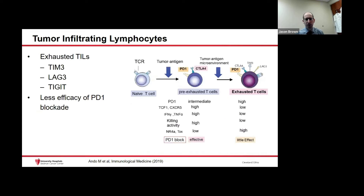There are also measures of how active tumor-infiltrating lymphocytes are. Once they become dysfunctional, they're called exhausted. Exhausted T cells actually have high PD-L1 scores, but immunotherapy or blockade of PD-1 is not as effective. Some markers of these dysfunctional TILs include TIM3, LAG3, and TIGIT. These may be markers of patients who previously received immunotherapy but are no longer responding, and we are looking into ways to block these to enhance the response to immunotherapy.